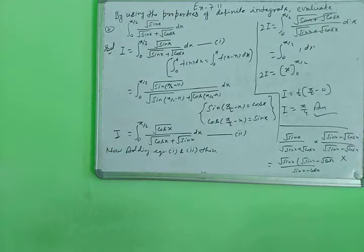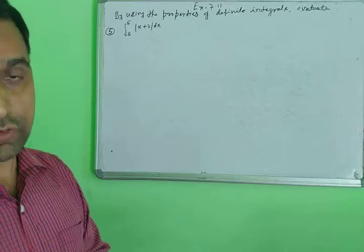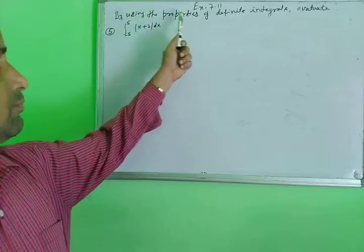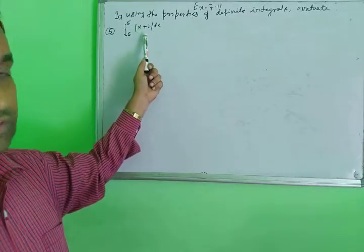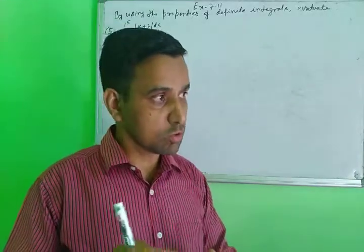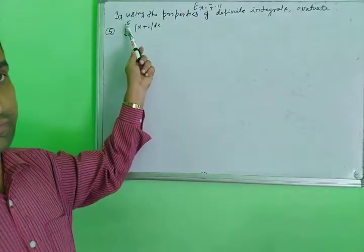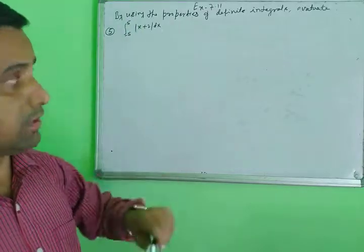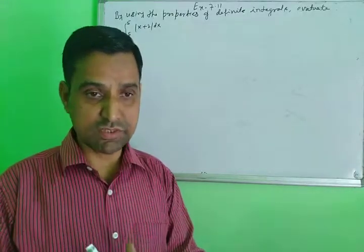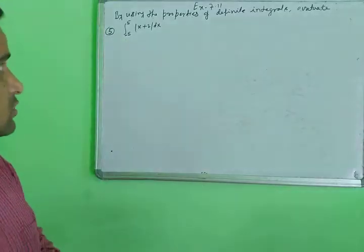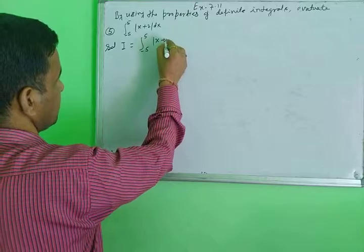Next question — a different and very important type, which often appears in board exams. Evaluate the integral from minus 5 to plus 5 of |x plus 2| dx using properties. Here |x plus 2| is a modulus function. You know that modulus always gives a positive value, but within the limit from minus 5 to plus 5, we must determine where the function is negative and where it is positive.